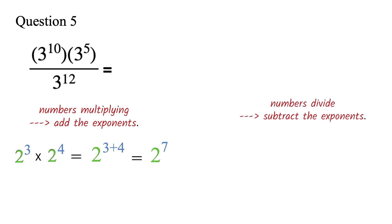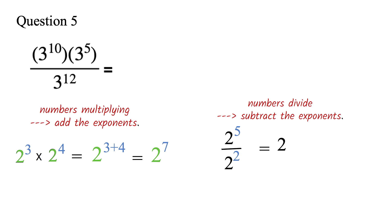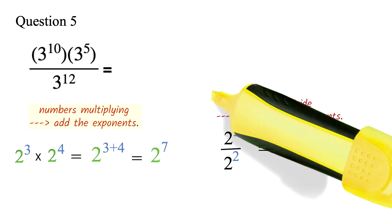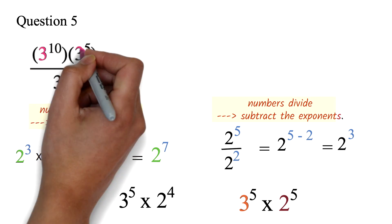If you have a number being divided by another number with the same base, you can simply subtract the exponents. So 2 exponent 5 divided by 2 exponent 2 will be 2 exponent 5 minus 2, which is 2 exponent 3. Please note these two rules apply only when the bases are the same. It will not work for 3 exponent 5 times 2 exponent 4, because the bases are different. Even if the exponents are the same and the bases are different, it won't work. For our question, all terms have the base of 3, so the rules can apply.